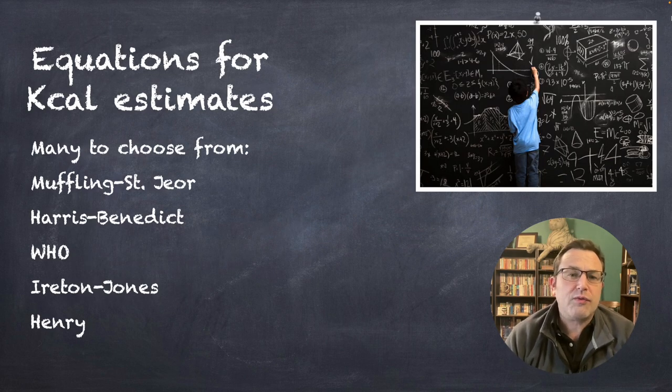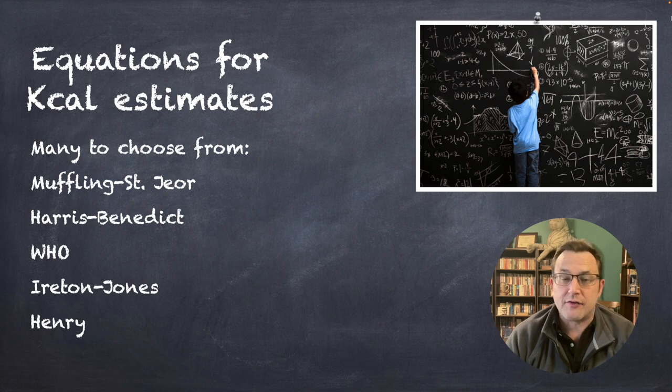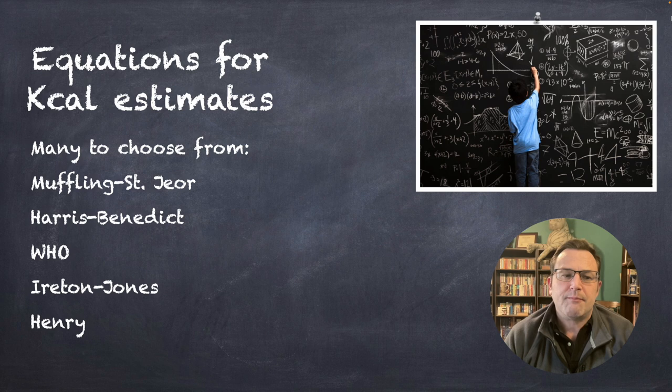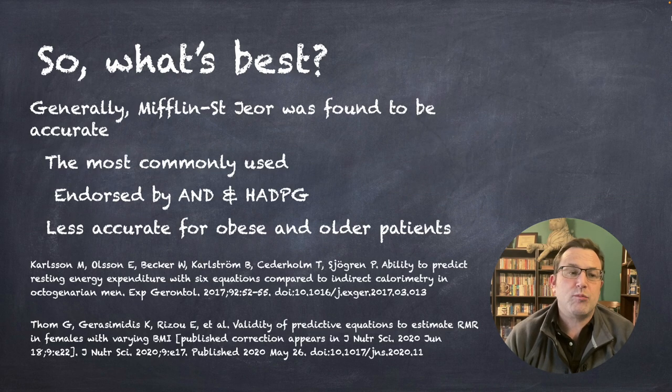So, there's two versions or two different tacks, I guess you could say. The first tack is equations. You can take an equation to estimate kilocalorie needs. There's a bunch to choose from. The most common one you'll see is the Mifflin-St. George. There's also the Harris-Benedict, the WHO, the Ireton-Jones, the Henry. There are many more than that.